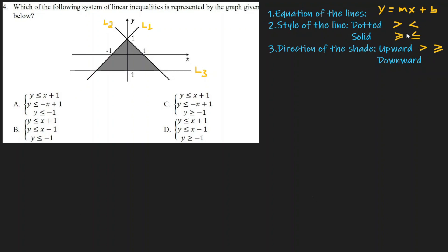Greater than or equal to if solid, greater than if dotted. If the shaded region is downward, we have dotted corner, less than, or solid corner, less than or equal to. If you want to see this, you can see the dotted line downward line.